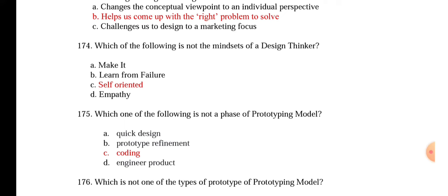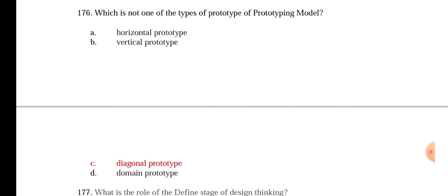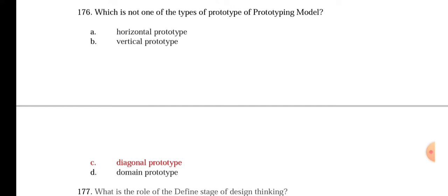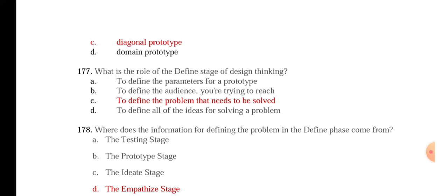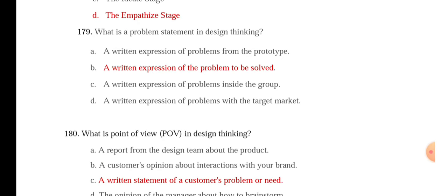Which of the following is not a mindset of a design thinker? Self-oriented is not at all the mindset of a design thinker. Which one of the following is not a phase of the prototyping model? Coding is not a phase. Which is not one of the types of prototype in the prototyping model? Diagonal prototype is not a type. What is the role of the define stage of design thinking? To define the problem that needs to be solved. Where does the information for defining the problem in the define phase come from? It comes from the previous phase, which is empathize.